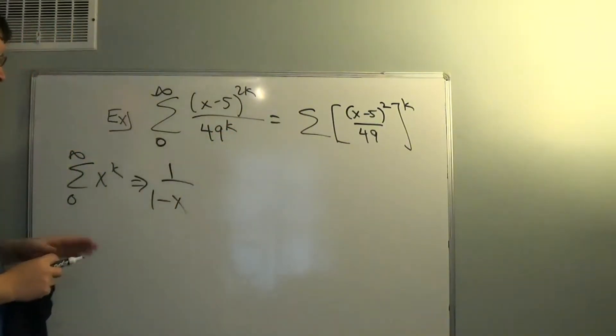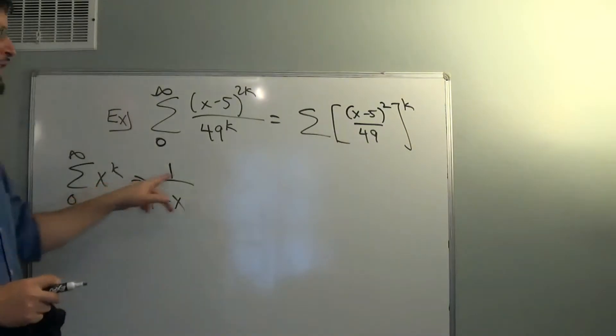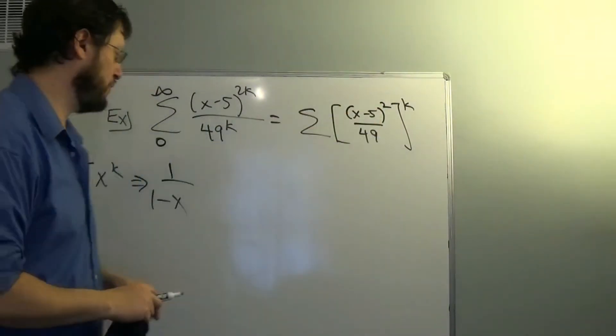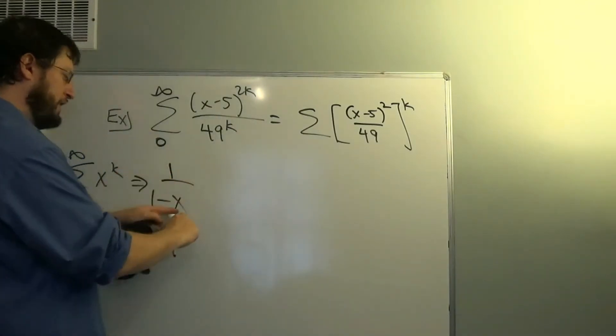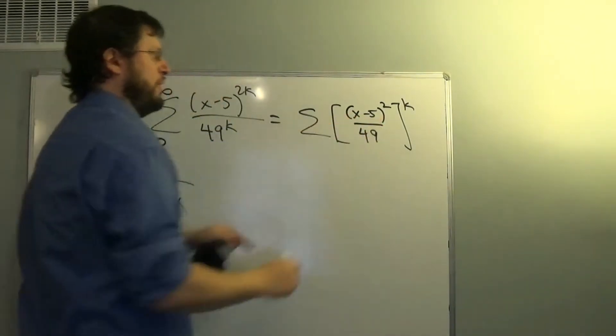Which means that's just exactly like we have here, except instead of x, we have x minus 5 squared over 49. So what we're going to do is replace the x here by x minus 5 squared over 49.